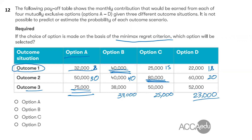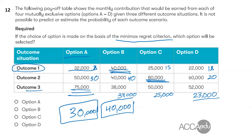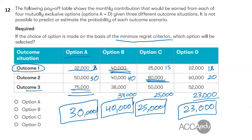For the minimax regret criterion, we find the maximum regret for each option across all outcomes: Option A's maximum regret is $30,000; Option B's is $40,000; Option C's is $25,000; Option D's is $23,000. The minimum of these maximum regrets is $23,000, associated with Option D. Therefore, choosing Option D means we regret the least.